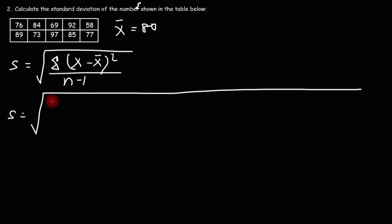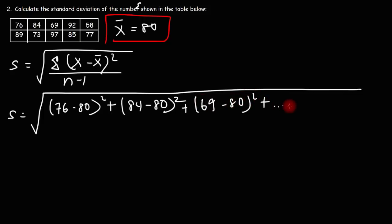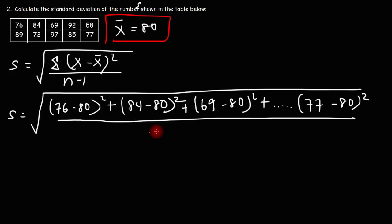So it's going to be the first number, 76 minus the mean which is 80, and then squared. And then it's going to be the next one, which is 84 minus the mean, and then don't forget to square it. We need to do this for all of the numbers. So the last one is going to be 77 minus 80 squared, and then divide it by n minus 1. We have 10 numbers, so this is going to be 10 minus 1.